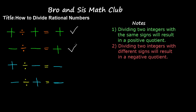Now if you divide two integers with different signs, you will result in a negative quotient. So if you divide a positive by a negative, you're going to get a negative quotient. And if you divide a negative by a positive, you're going to get a negative quotient as well.